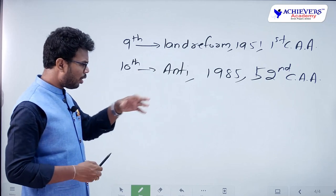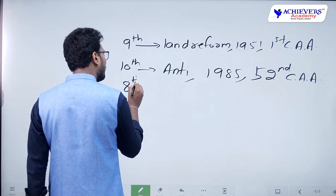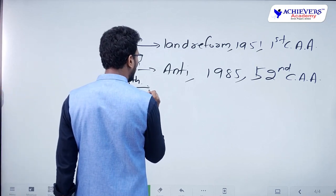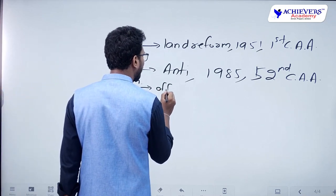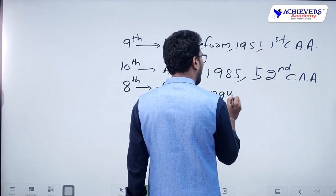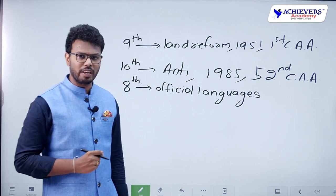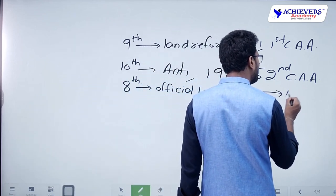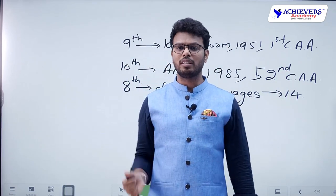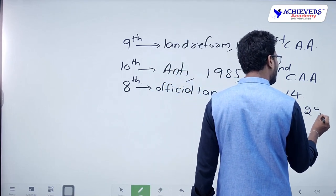The 8th schedule is all about official languages. Since the beginning of the constitution there were 14 official languages, but the number has increased over time. At present there are 22 official languages. I am giving you an assignment: find out all 22 official languages, because examination questions can ask which languages are official and which are not.